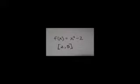Find the average rate of change of f(x) equals x squared minus 2 over the interval 2, 5. Solve the function for both endpoints of the interval 2 and 5.